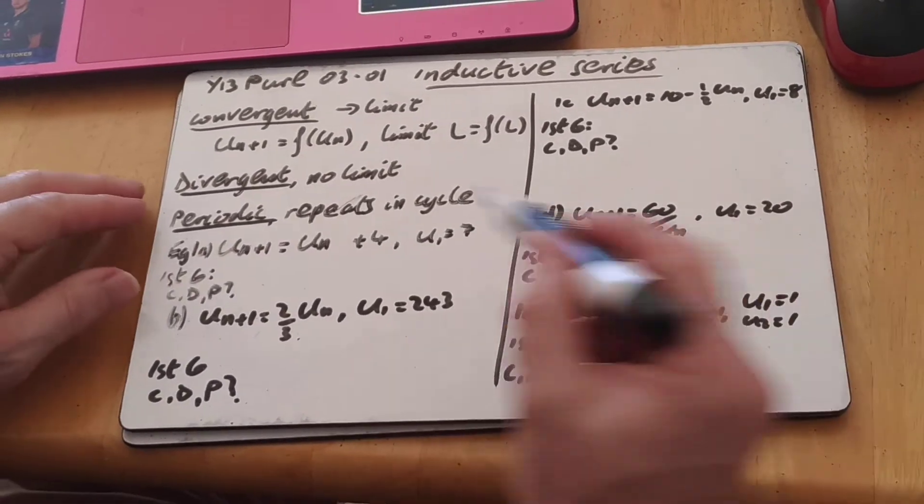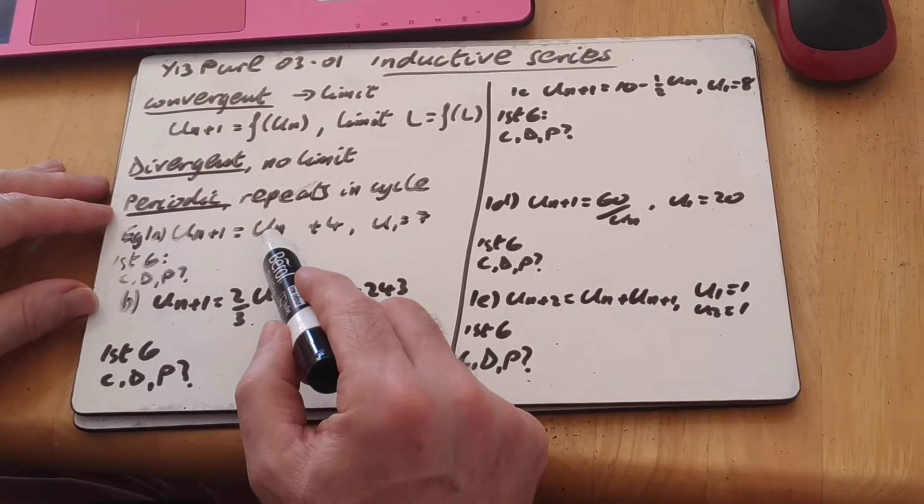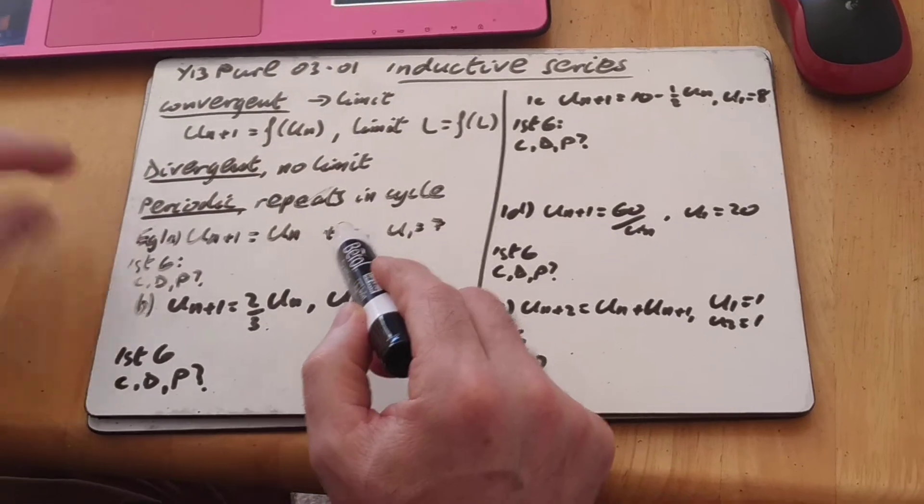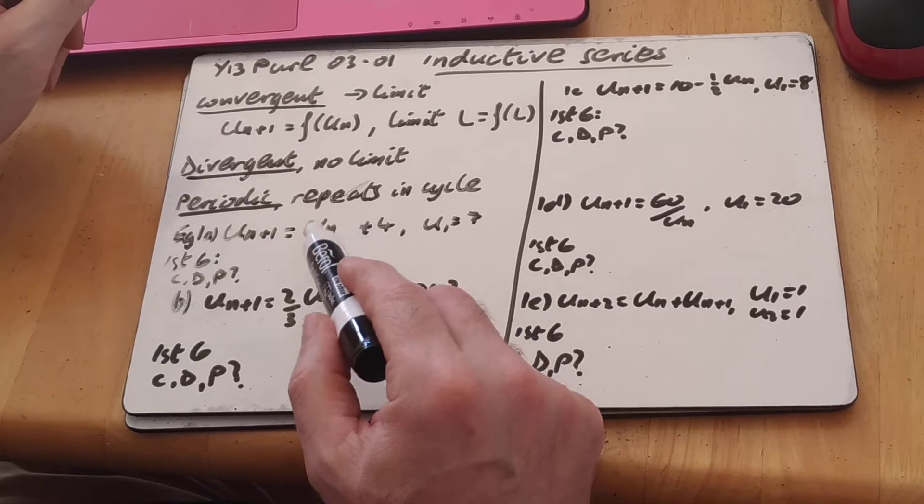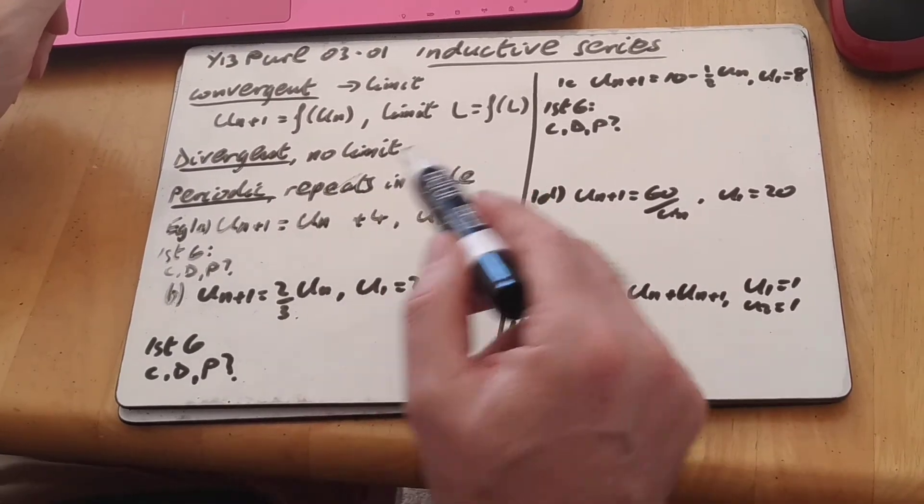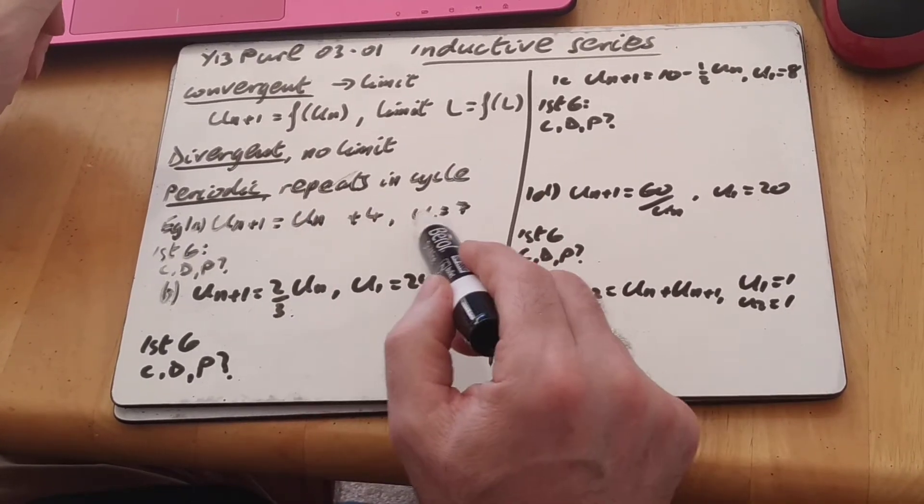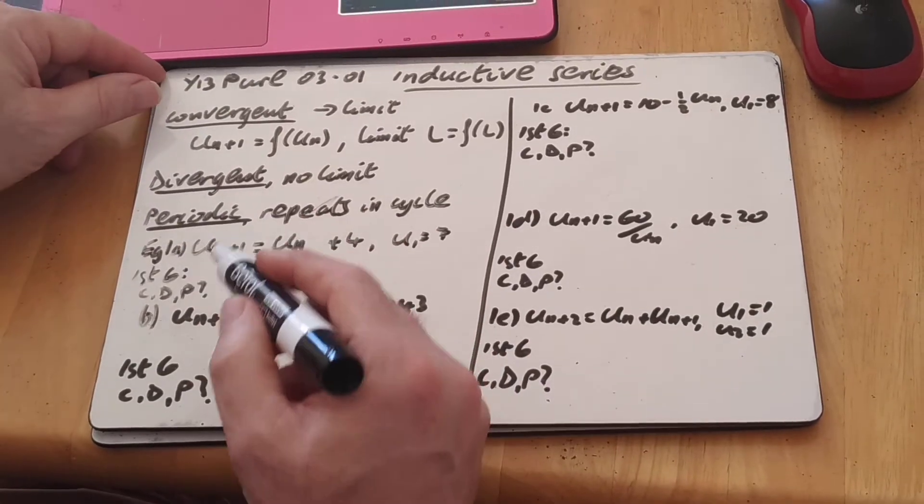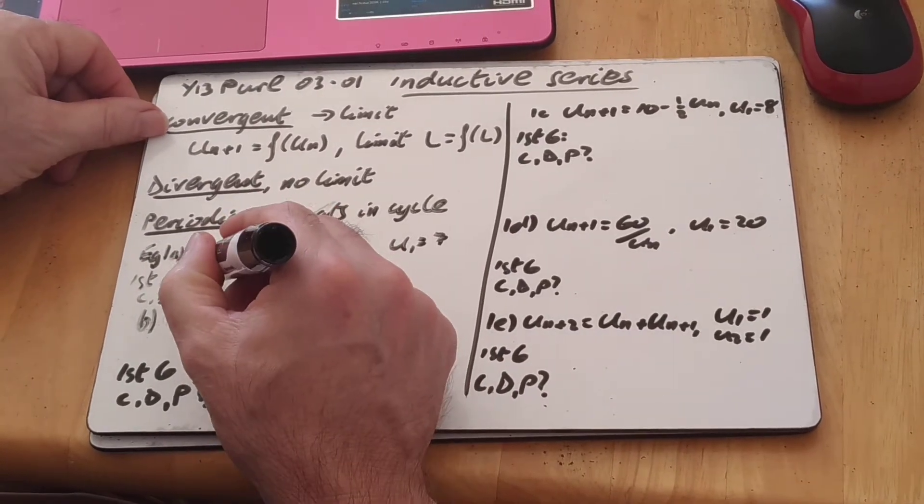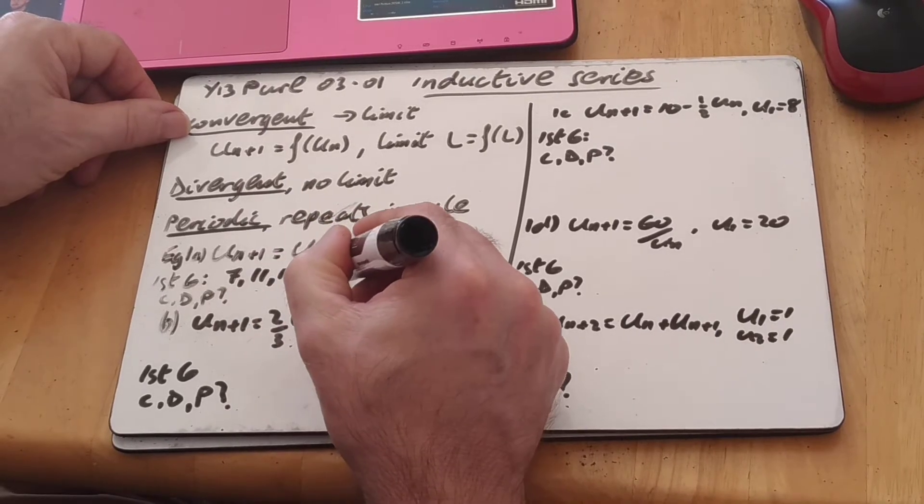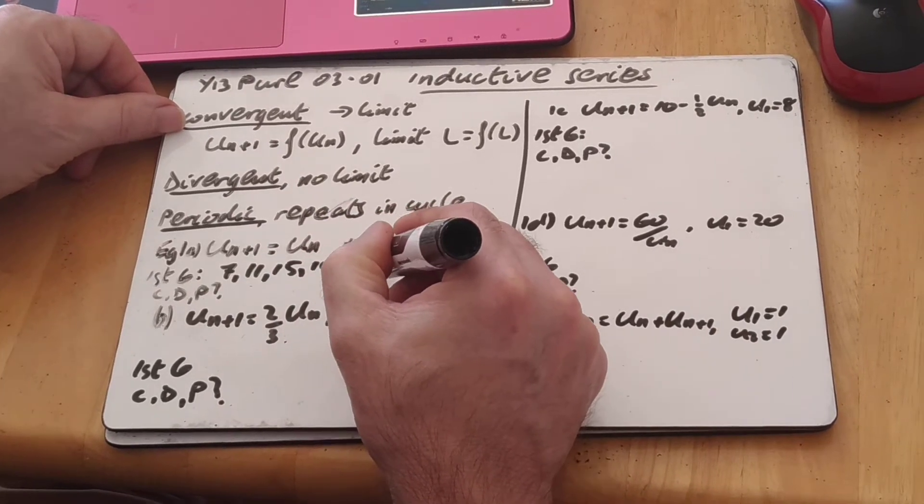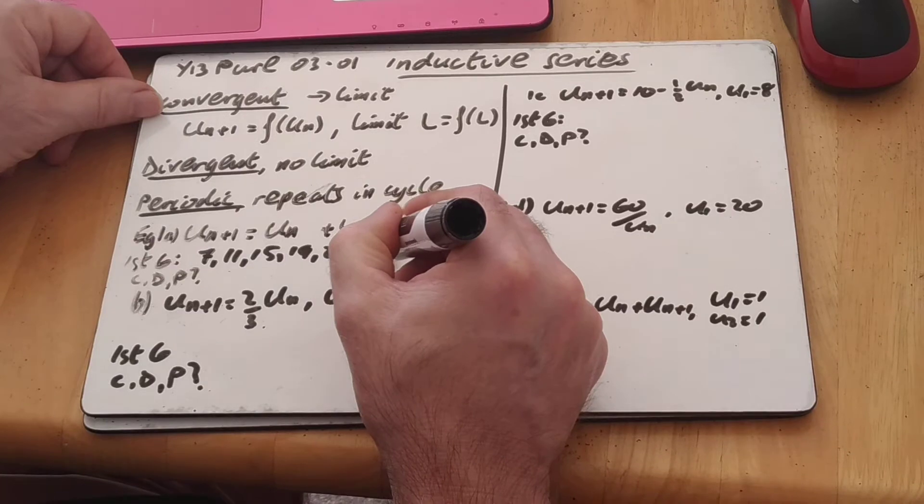We've got a basic one here, u of n plus 1 equals u of n and then add 4. So it's going up in 4s. It's how we used to write at GCSE, like 4n minus 3, 4n plus 5, that sort of series there. And we're given the first value 7, it asks for the first 6, so obviously the first one is 7, and then add 4, 11, 15, 19, 23, and 27.